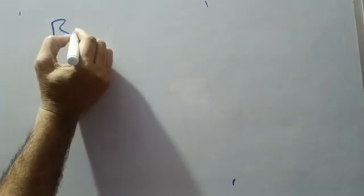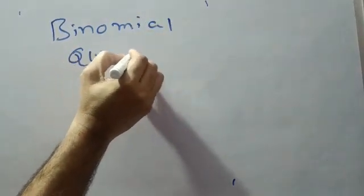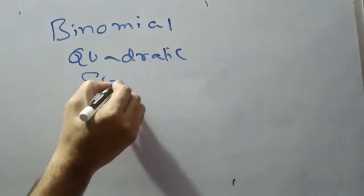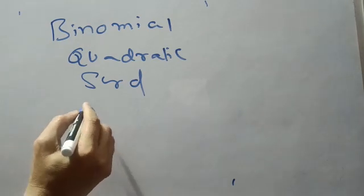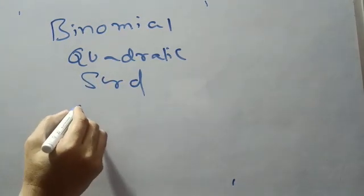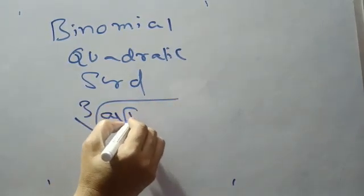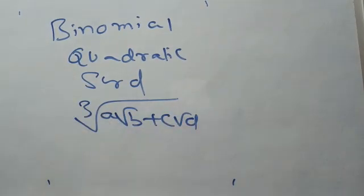This is Binomial Quadratic Surd. For Binomial Quadratic Surd, we will find the cube root using the shortcut method. A Binomial Quadratic Surd is of the form A√B + C√D, or A + C√D. These are Binomial Quadratic Surds.